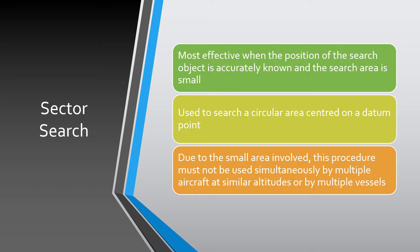The sector search is most effective when the position of the search object is accurately known and the search area is small. When learning about different search methods, note the differences between each pattern and when it is used. For example, the parallel sweep search is conducted when the position of the object is not known and the search area is large, whereas the sector search method is the opposite — you know the person or object that has fallen overboard and the search area is small.